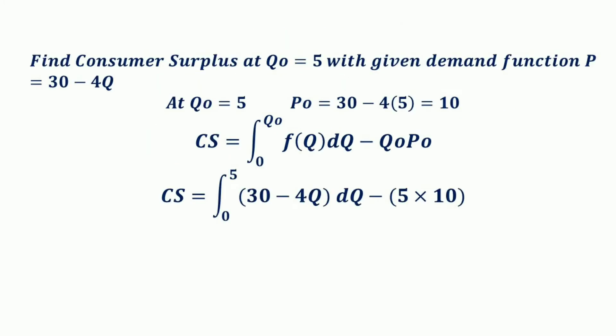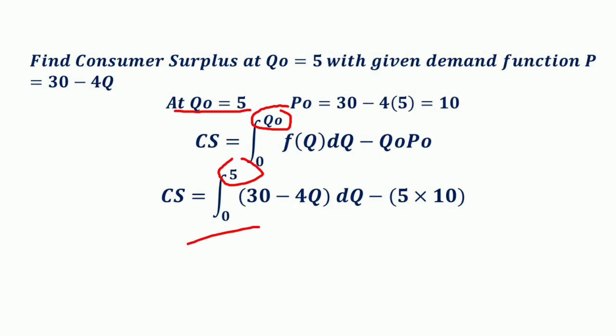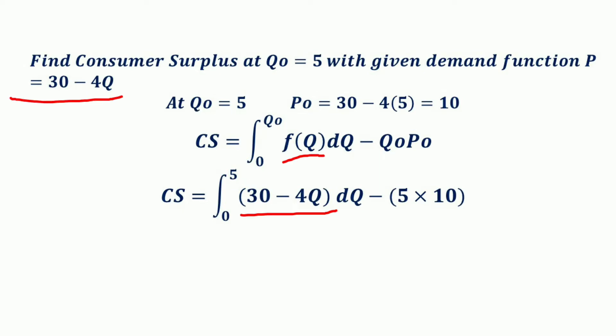After getting the equilibrium price and quantity, which are 10 and 5 respectively, the next step is to substitute these values and the demand function into the formula for calculating consumer surplus: the integral from 0 to Q₀ of F(Q) dQ minus Q₀ times P₀. So the consumer surplus is the integral from 0 to 5 of (30 minus 4Q) dQ, minus 5 times 10.